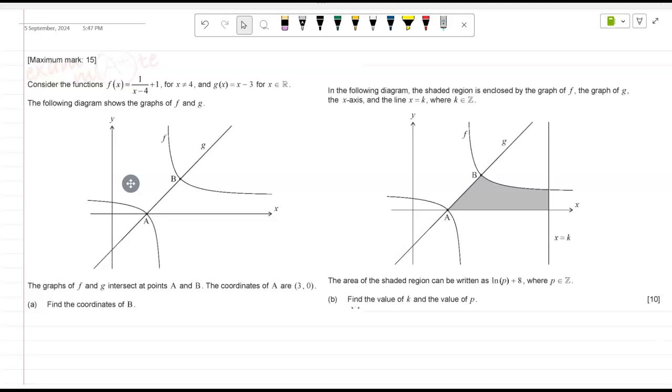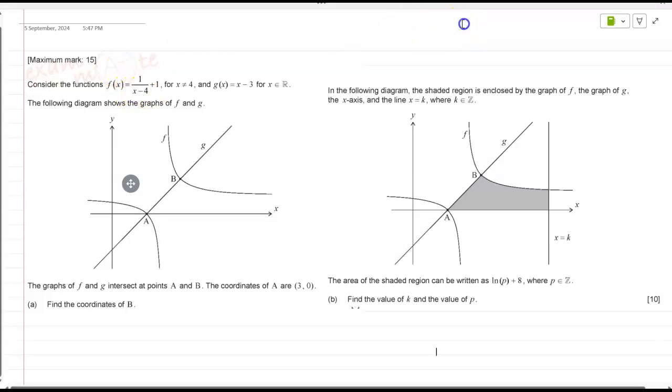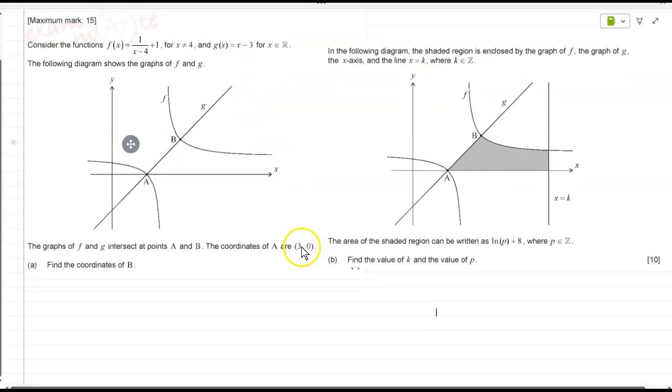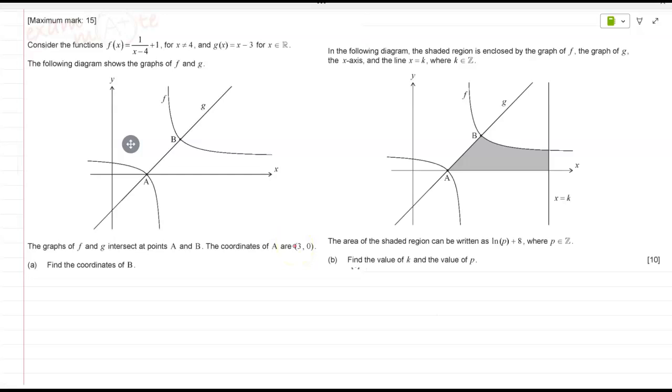So first part you've got something working enough. So B is 5 comma 2, so you just equate and basically solve. Correct. So you equate your fx with gx, when you equate your fx with gx and you solve, you know this is your factor that's given to you. So once you get your 5, you can put it in any equation to get your other one.